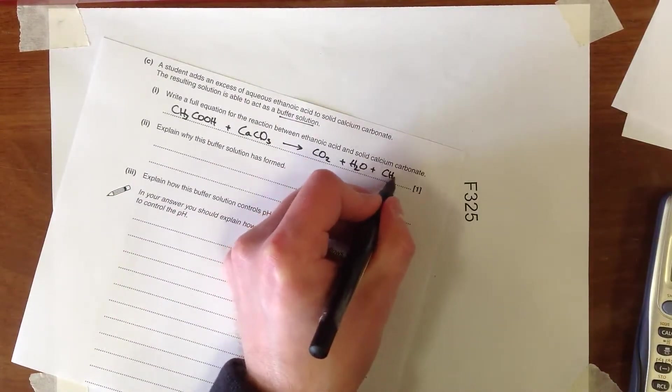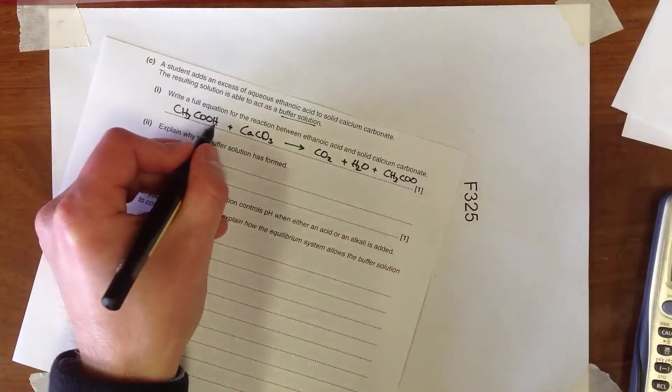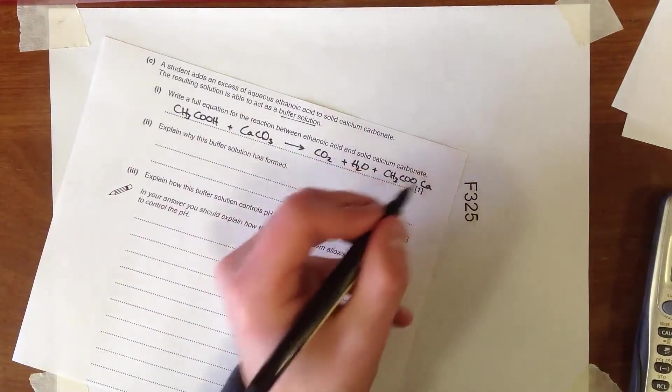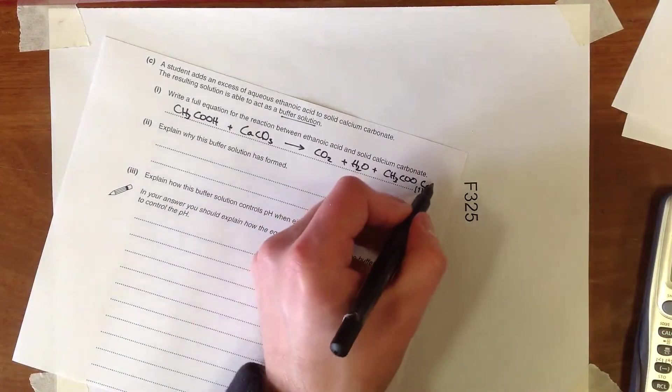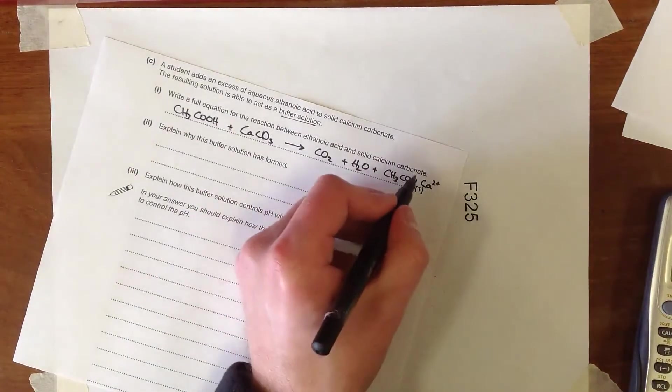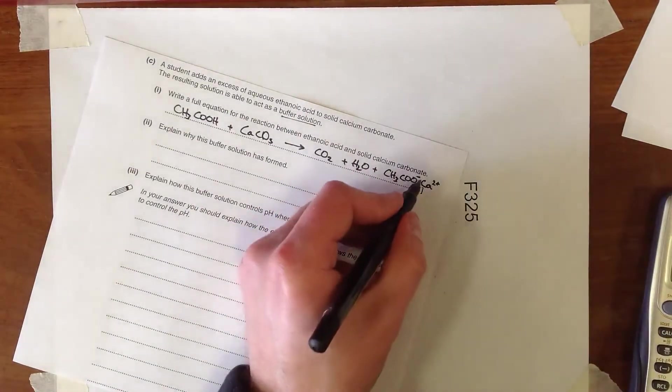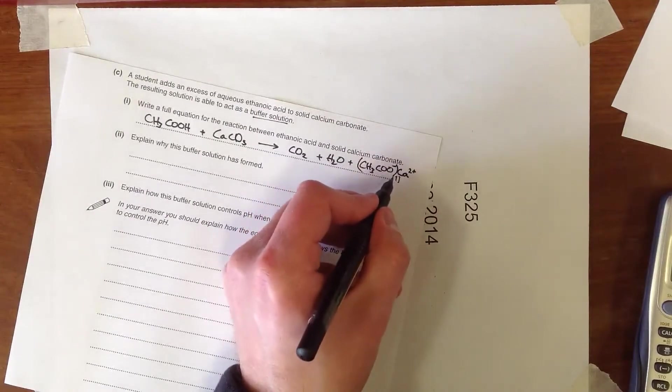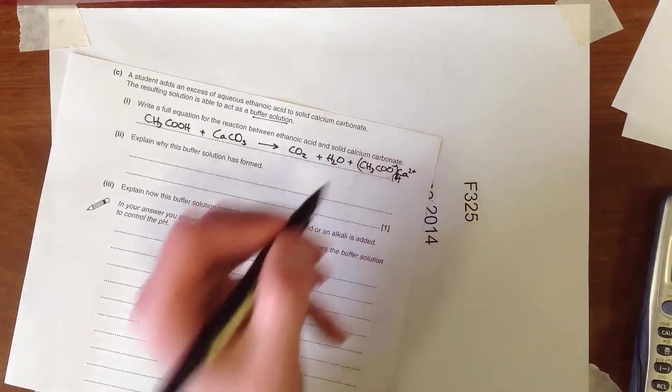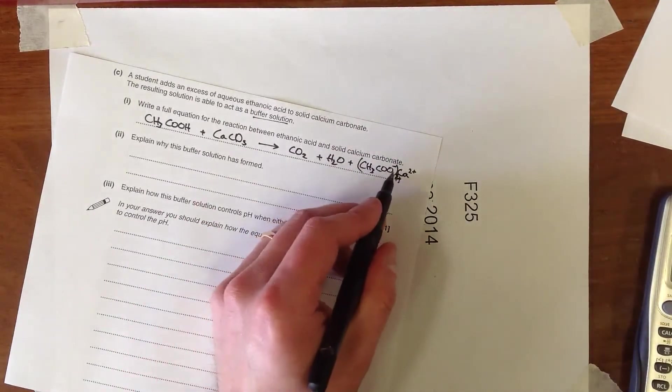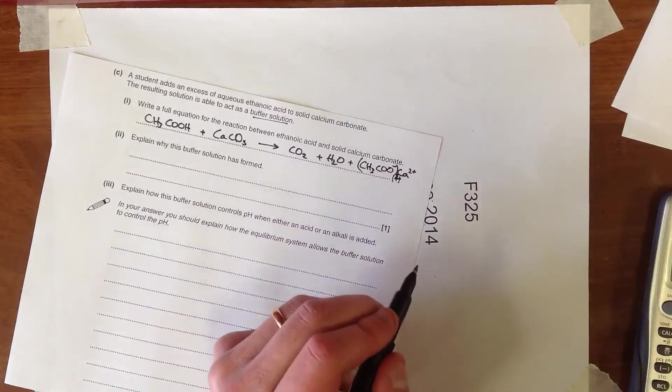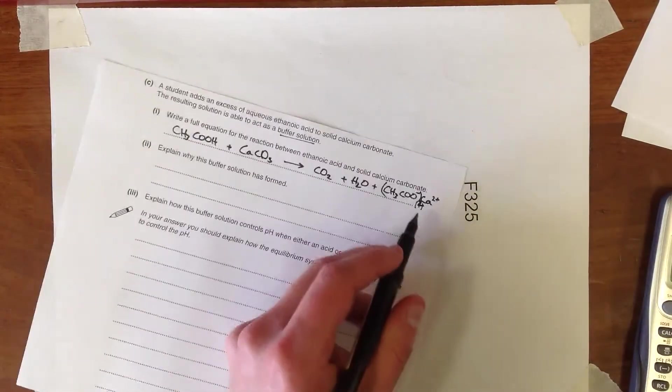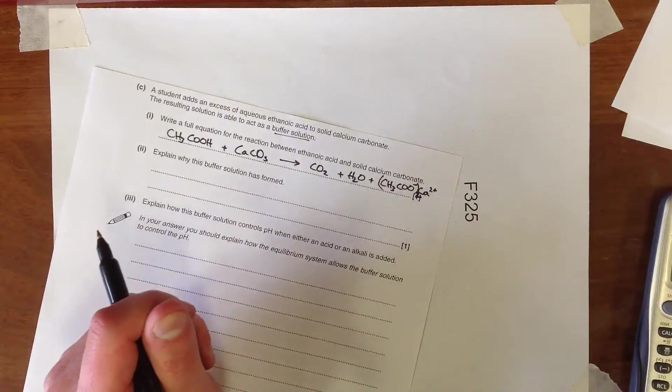So CH3COOH is being replaced by the calcium. And we have to remind ourselves that the calcium's charge would be 2+, whereas the ethanoate is a single negative charge. So we need the ethanoate to appear twice in this. So CH3COO- twice Ca2+. Now you can leave the charges in if you want, but you don't have to put the charges in.